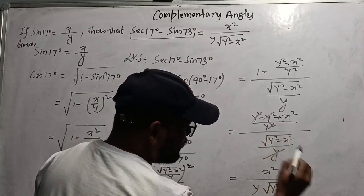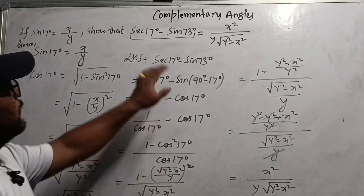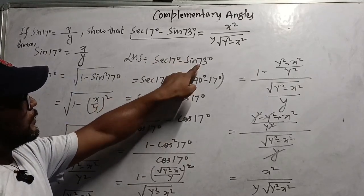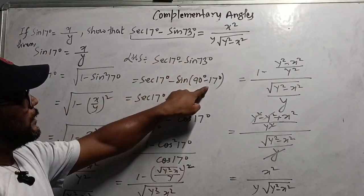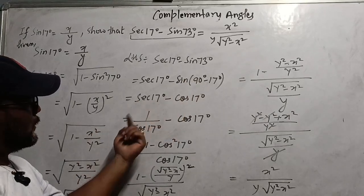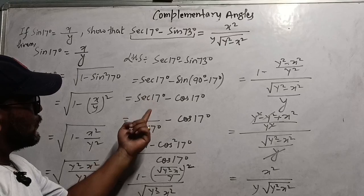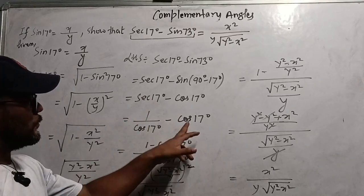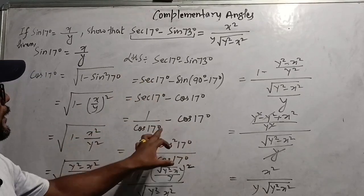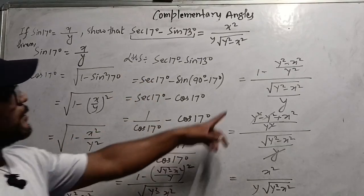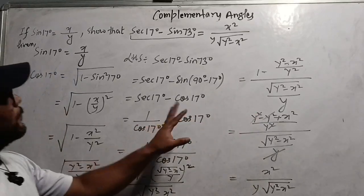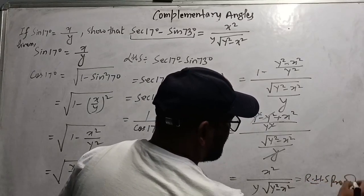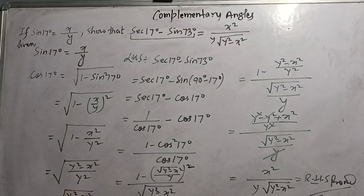After simplification, y² terms cancel, and you get x² over y·√(y² - x²), which equals the RHS. So the proof is complete. The key steps were: convert 73° to 17°, use sec θ = 1/cos θ, and substitute all values in terms of cos17°.